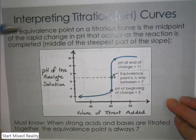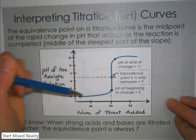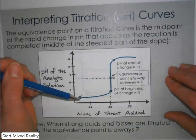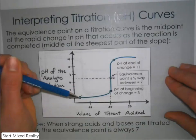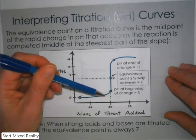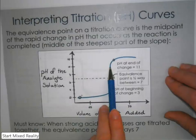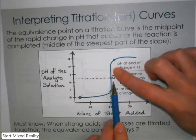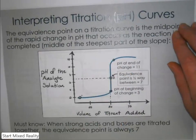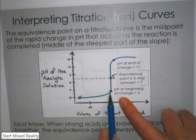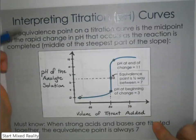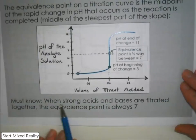The equivalence point on a titration curve is the midpoint of the rapid change. For chem 20 it'll always be 7, but on any titration curve you can find the equivalence point by looking for where the curve starts to straighten into a vertical line and where it starts to branch off — halfway between those is your equivalence point. For example, if the pH begins to change at about 3 and ends at about 11, halfway in between would be 7.